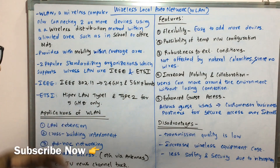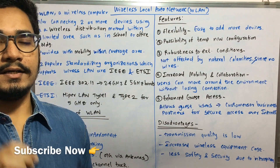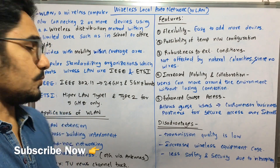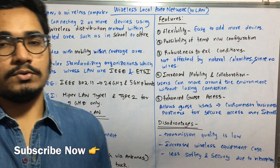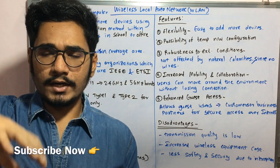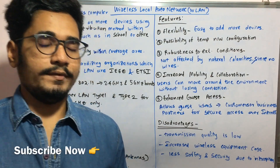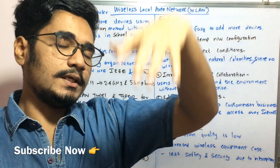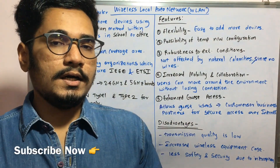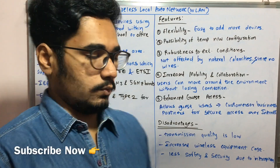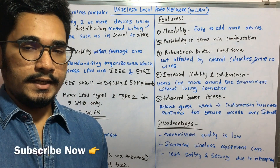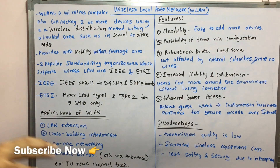WLAN has several major applications. First and foremost, it is used for LAN extension — with traditional wired LAN, cabling, wiring, drilling, and putting holes becomes a very challenging issue, so LAN extension is the prime major application provided by WLAN. Next is cross-building interconnect: if one building has LAN connectivity and a neighboring building does not, traditionally you put a junction box in between to share data or bandwidth between building one and building two. WLAN tackles this data loss challenge with cross-building interconnect.